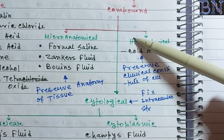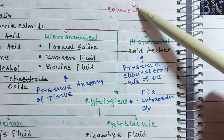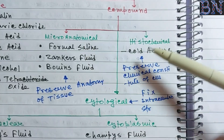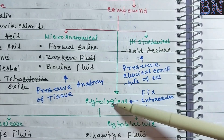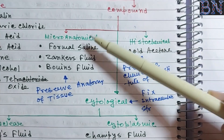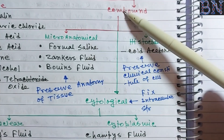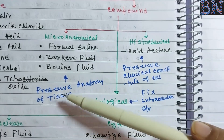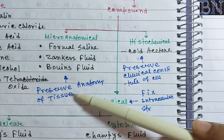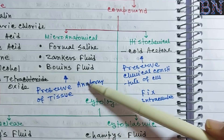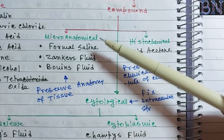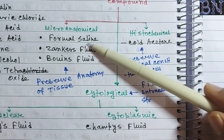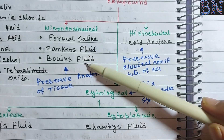Compound fixative is different from simple fixative. So micro-anatomical compound fixative preserves the anatomy of tissue — the tissue in the same material will be preserved. For micro-anatomical compound fixative, the examples are formal saline, Jankers fluid, and Buins fluid.